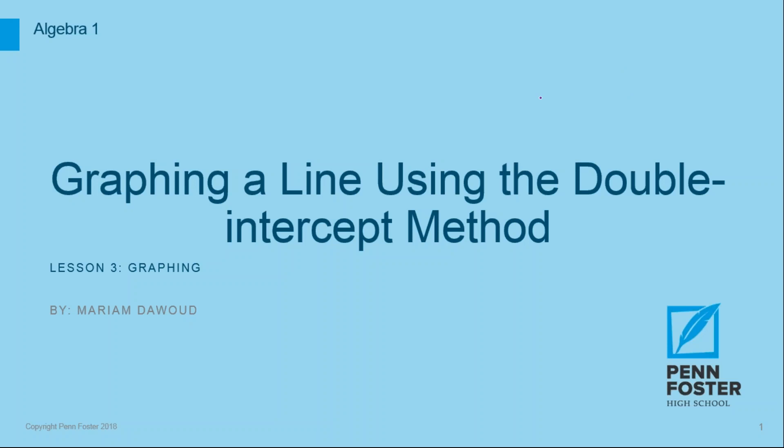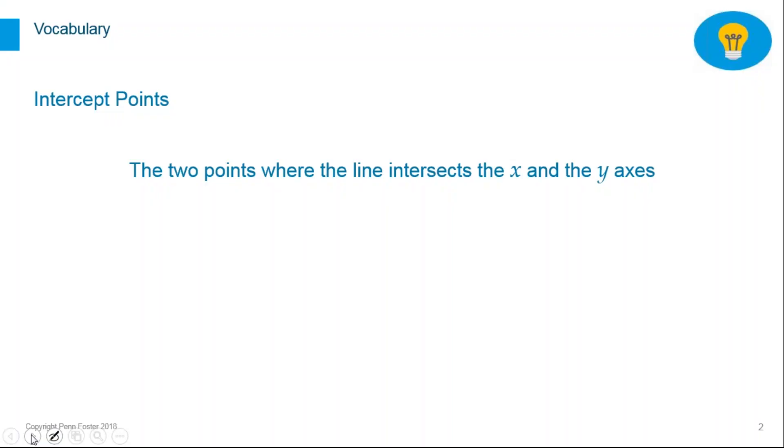Hello, everyone. In this video, we will look at how to graph a line using the double intercept method. First of all, we need to understand what are the intercept points. The intercept points of a straight line are the two points where the line intersects the y-axis and the x-axis.